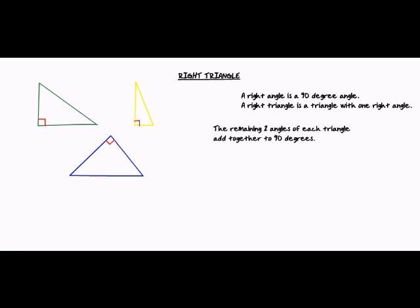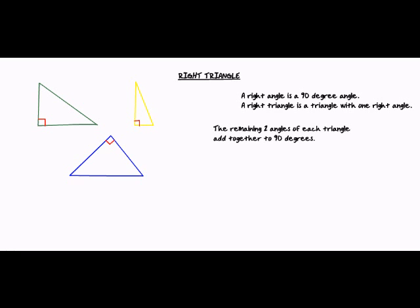So a right triangle can have 2 equal sides or no equal sides. You can't have 3 equal sides, because that would make it equilateral, and we don't have a 90 degree angle in our equilateral triangles. But you can have an isosceles right triangle, or just a right triangle with 3 different sides. The side that is opposite the right angle is always going to be our longest side, and that is called our hypotenuse.